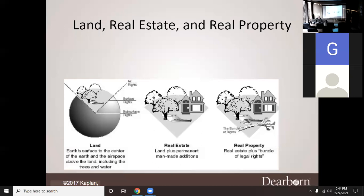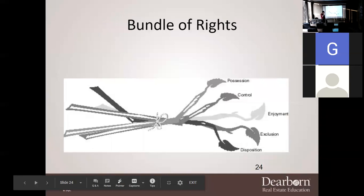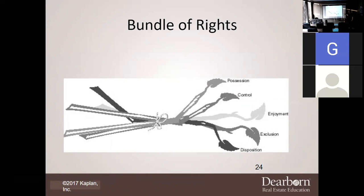Everything's different. In one city it may be done this way; in another city, completely different. When you go into other states and countries, it's even crazier. We're just giving you the basis, but anything can happen — you can't standardize real estate. Now, with real property, if I sell you 1, 2, 3 Main Street, you're getting the land plus the man-made structures plus the rights to live on that land. In the bundle of rights, you have possession, control, enjoyment, exclusion, and disposition.